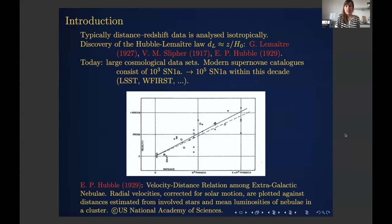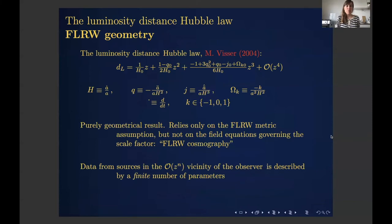In order to do this we need some theory to understand the anisotropy we would expect to see in the distance-redshift relation. Briefly recalling results from the Friedmann-Lemaître-Robertson-Walker class of geometries: the luminosity distance can be expanded into a power series in redshift where the first-order term is the usual Hubble law.